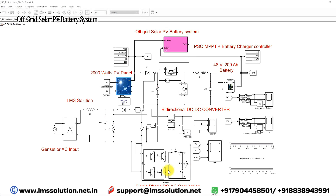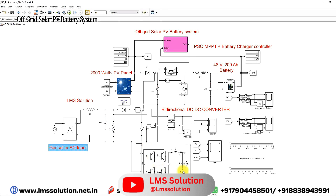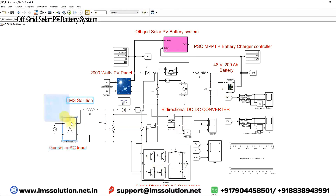Here we are not using any grid system. If there is no power from the PV and the battery state of charge is very low, we can use a generator set or AC input to supply the AC load as well as to charge the battery. We have a backup generator — we can use a generator or AC input directly.